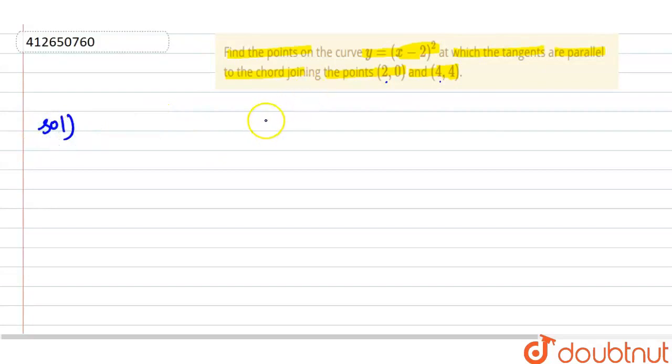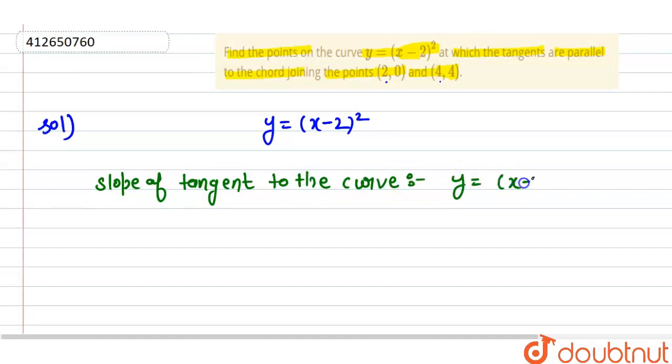See, we have given the curve y equals (x minus 2) whole square. So, the slope of tangent to the curve y equals (x minus 2) squared is dy/dx equals 2(x minus 2). Therefore, m₁ equals 2x minus 4.